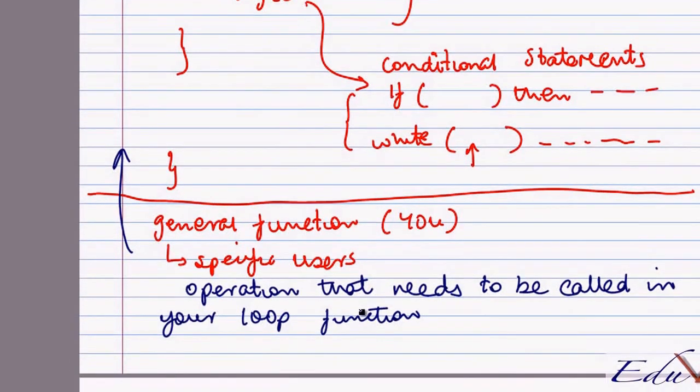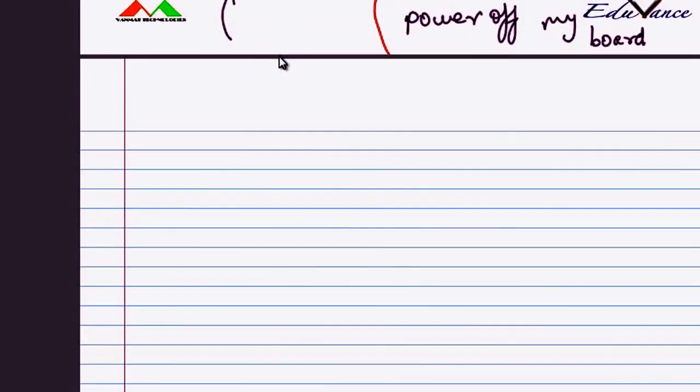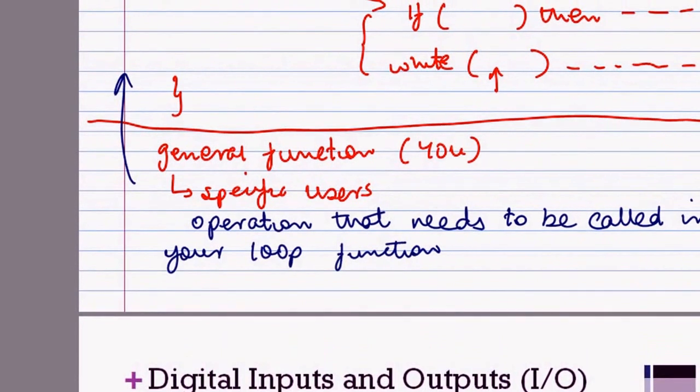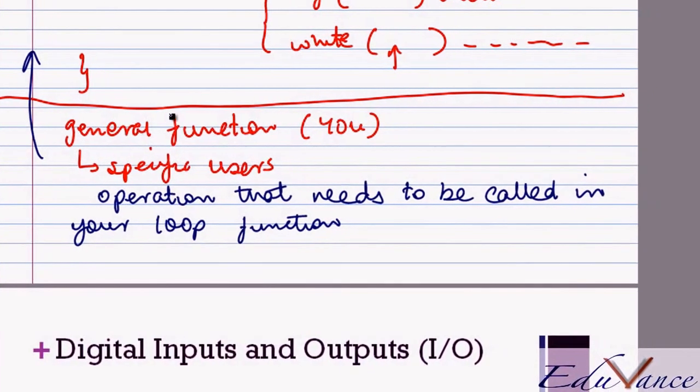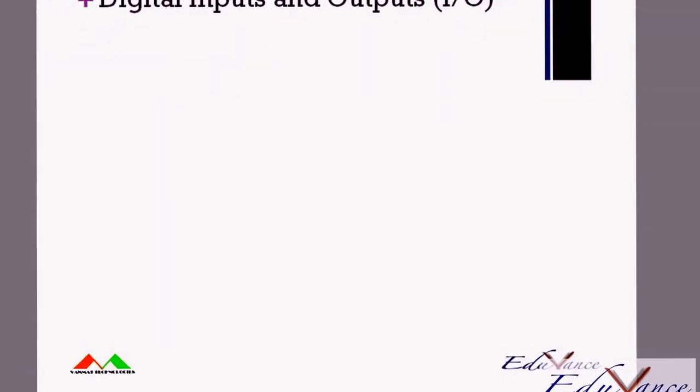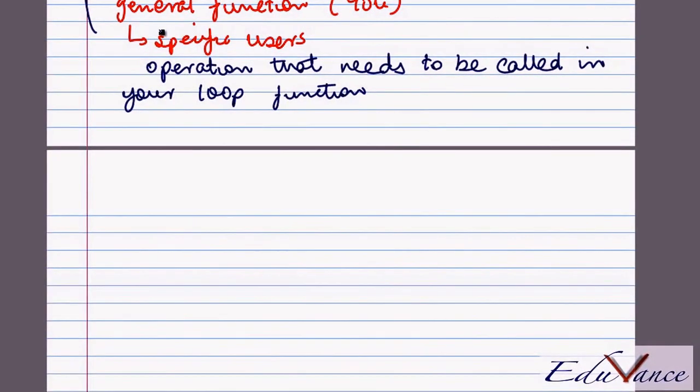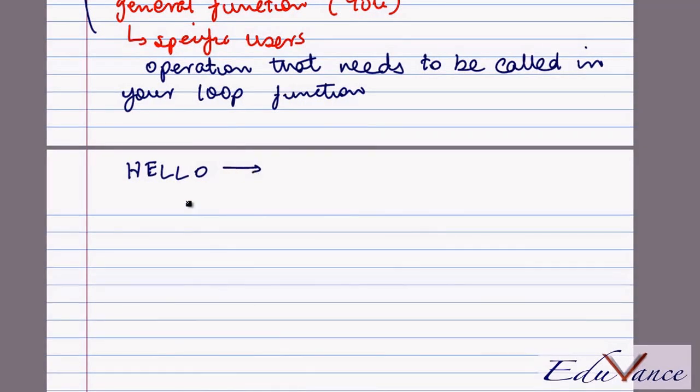For example, I want to display the term hello on some sort of a specific display. First I would have to do H, then E, then L, then L, then O.